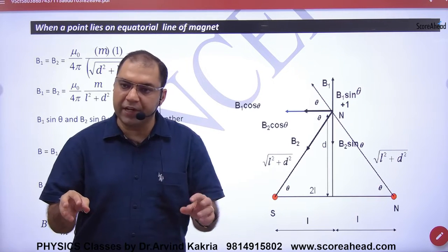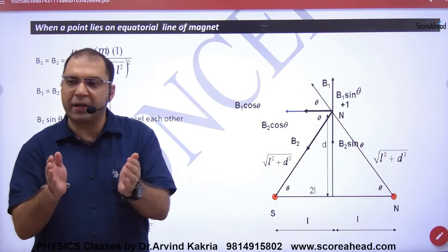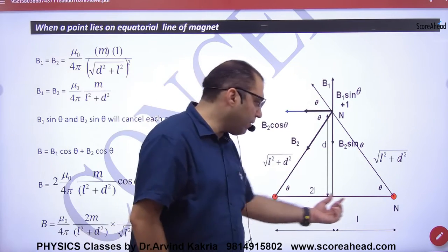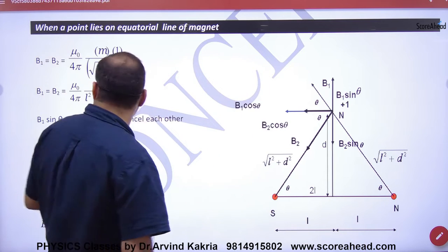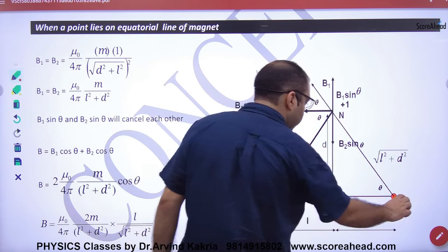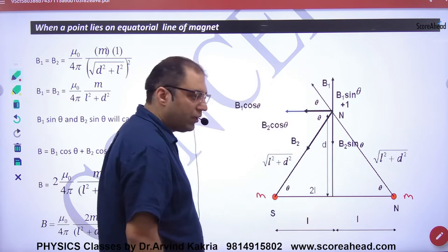We have to derive the magnetic field from any magnetic dipole on the equatorial line. What is the equatorial line? This is a dipole. The pole strength is small m, separated by 2L. This is the equatorial line.